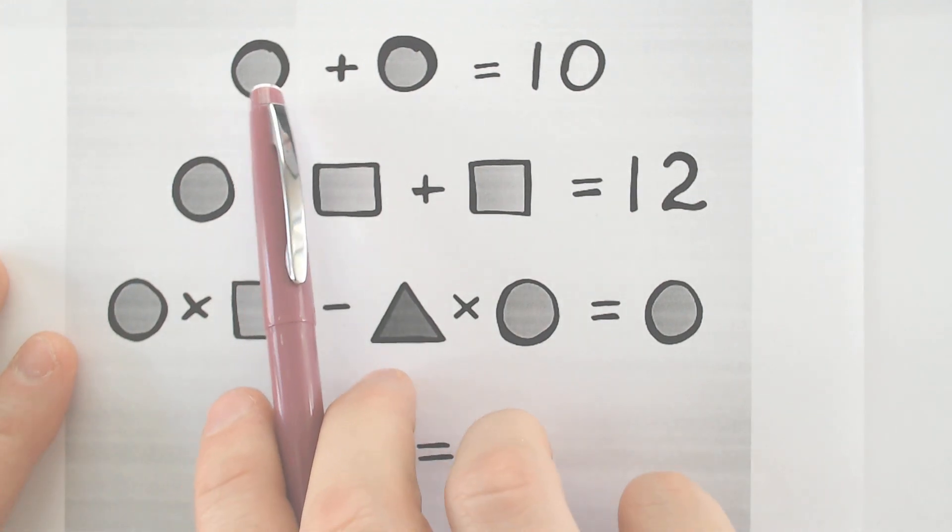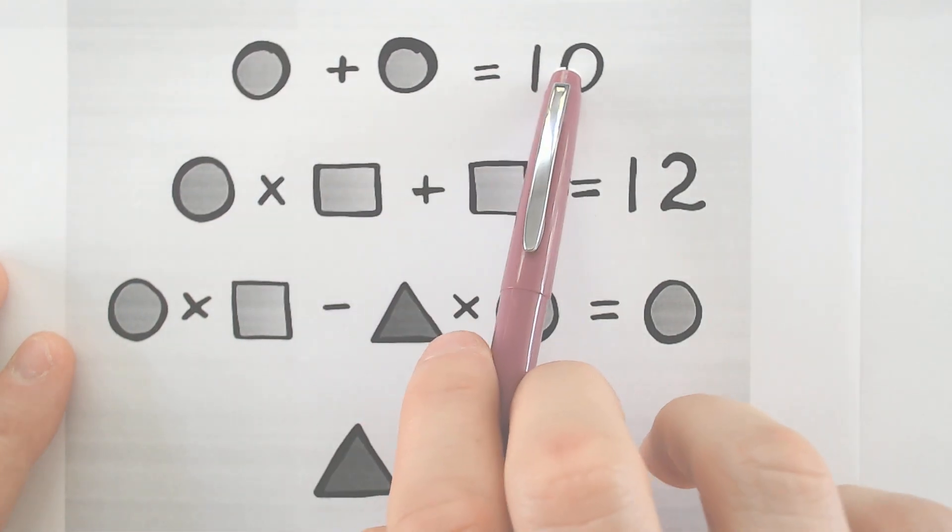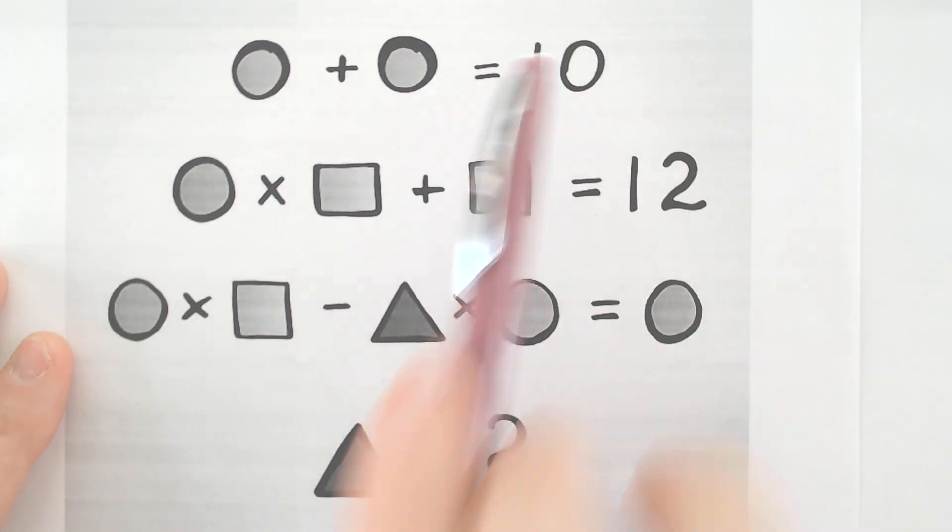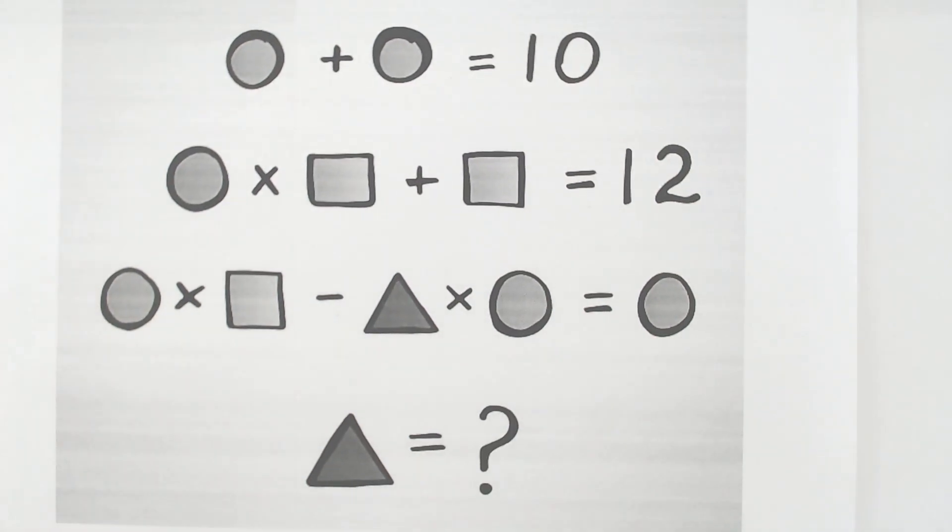You might be thinking okay, this is not bad, I can even do this in my head because the first part is pretty easy. What plus what is equal to 10? That would be 5 plus 5 would have to equal 10.